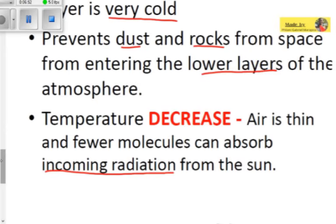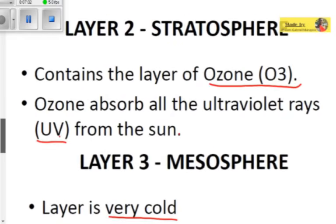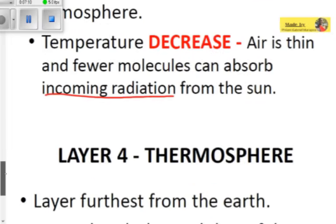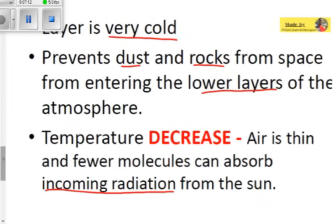In the mesosphere, the air is thin and only a few molecules can absorb incoming radiation from the sun. Remember, the stratosphere's ozone absorbs all the ultraviolet rays, but in the mesosphere only a fewer molecules absorb the incoming UV radiation.